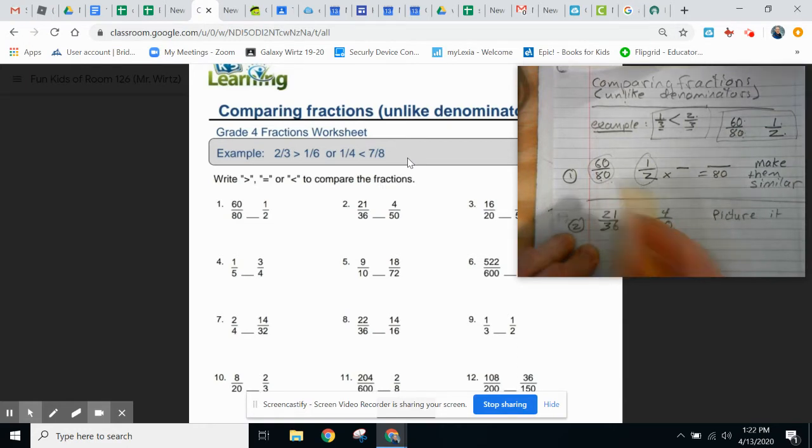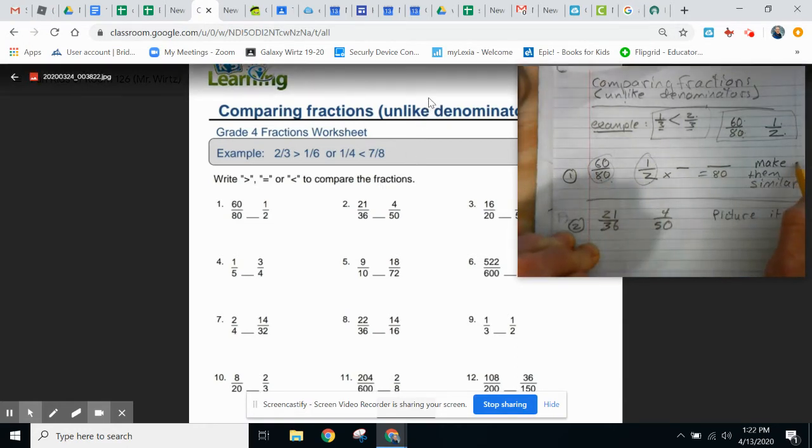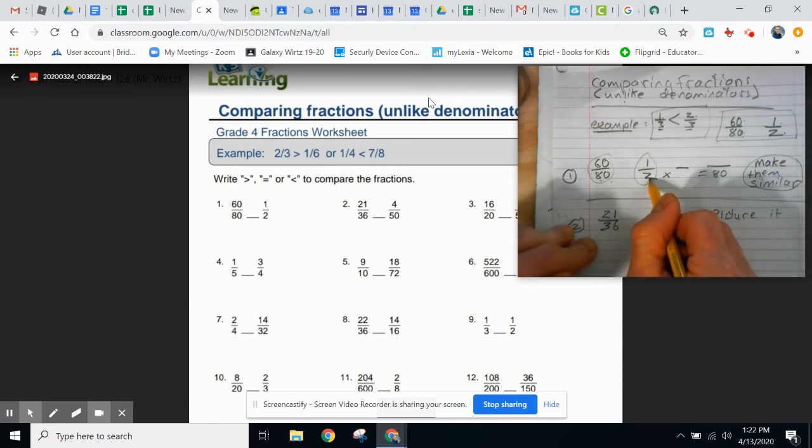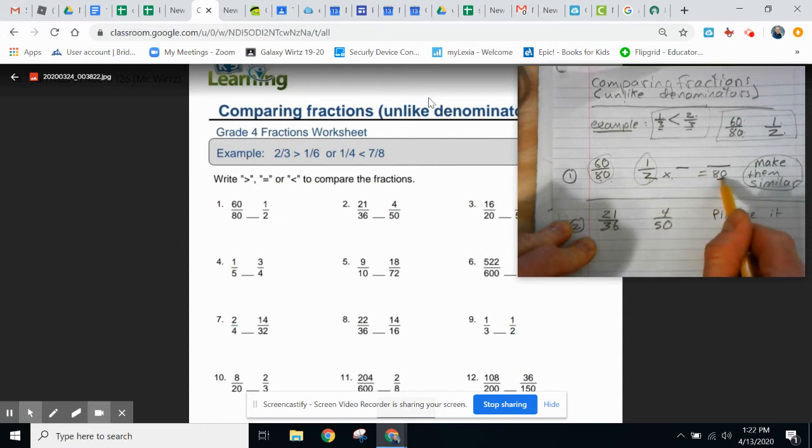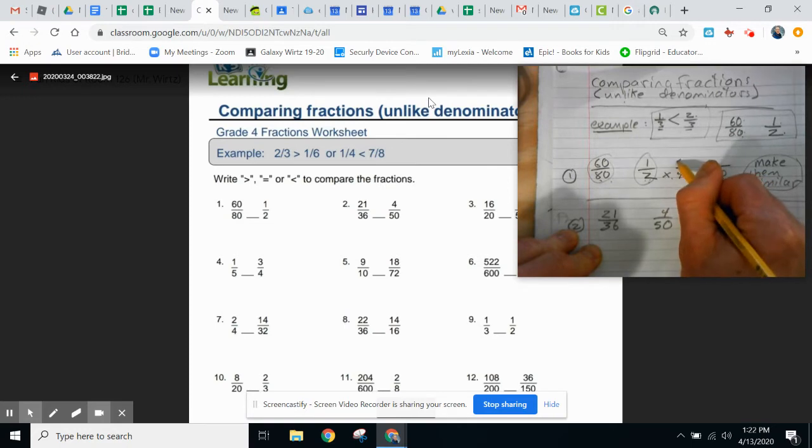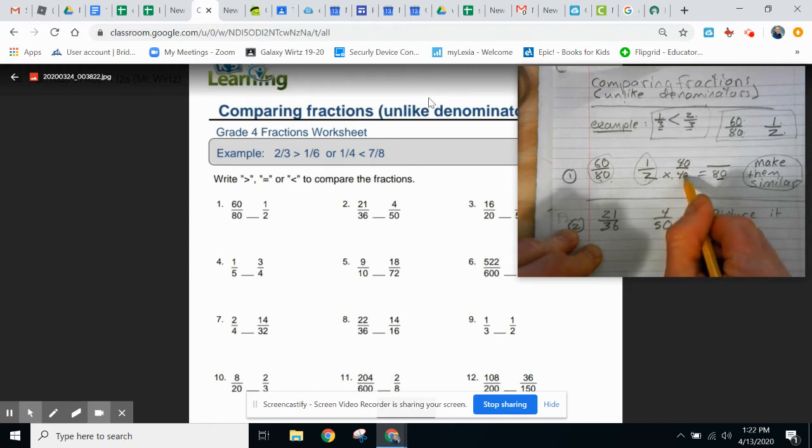So let's do it down here. And we're going to do it by make them similar. Make the denominator similar. One way to do that is to multiply two times what gets us to 80. That way, this denominator will be similar to that one. Two times what gets us to 80? Well, we know that 2 times 40 gets us to 80. Same on the top and bottom. So that we can make equivalent fraction.